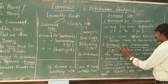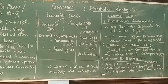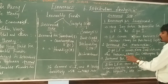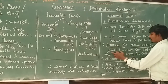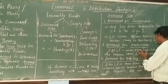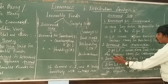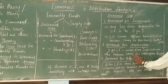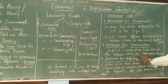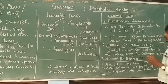The second category is demand for consumption. Demand for loanable funds comes from individuals who borrow money for consumption purposes.